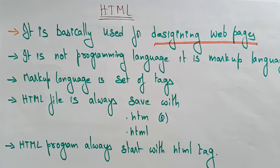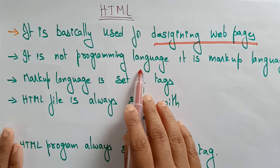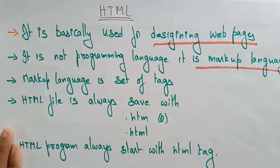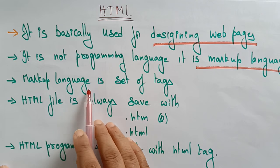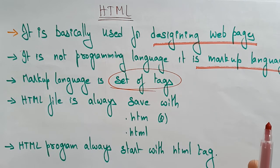Now, HTML is not a programming language — it is a markup language. You have to remember that. It's not a programming language like C, C++, or Java. It is simply a markup language. A markup language is a set of tags.